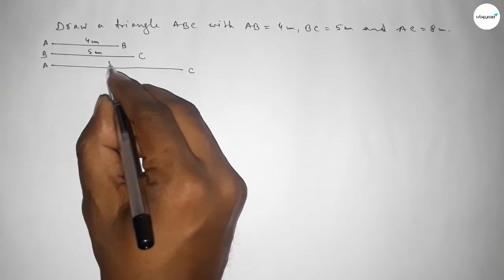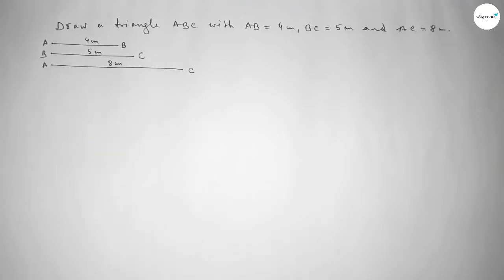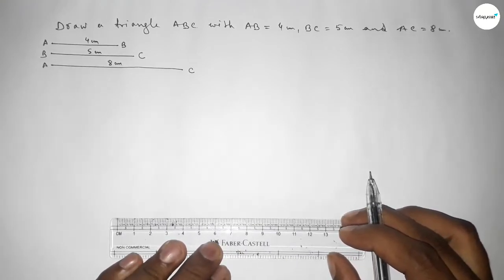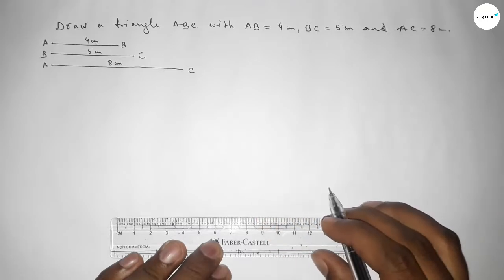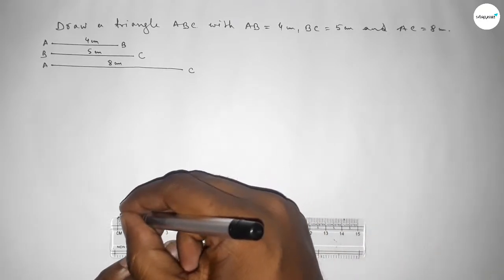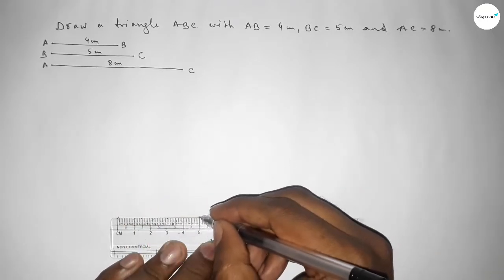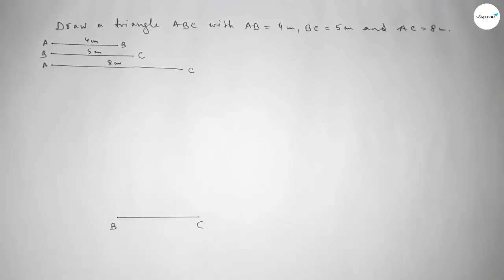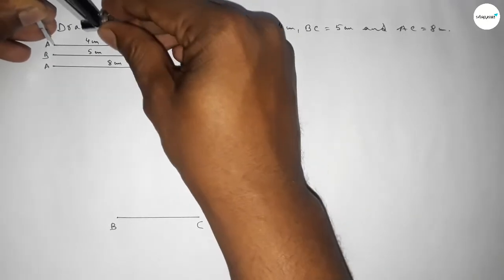First, we draw a line of length 5 centimeters — starting from 0 to 5. This is the base line BC. We mark point B at one end and point C at the other end.